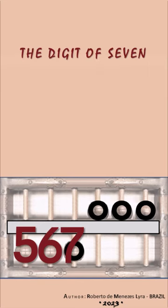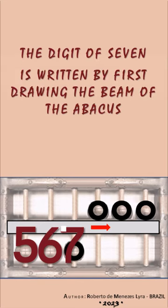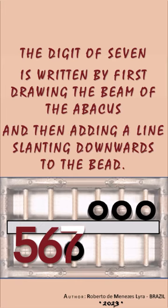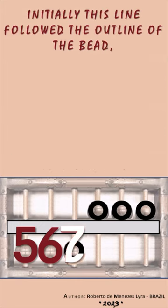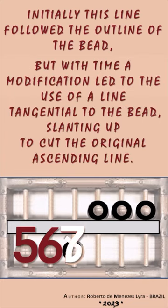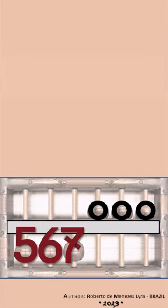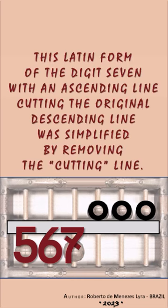The digit 7 is written by first drawing the beam of the abacus and then adding a line slanting downwards to the bead. Initially this line followed the outline of the bead, but with time a modification led to the use of a line tangential to the bead, slanting up to cut the original ascending line. This Latin form of the digit 7 with an ascending line cutting the original descending line was simplified by removing the cutting line.